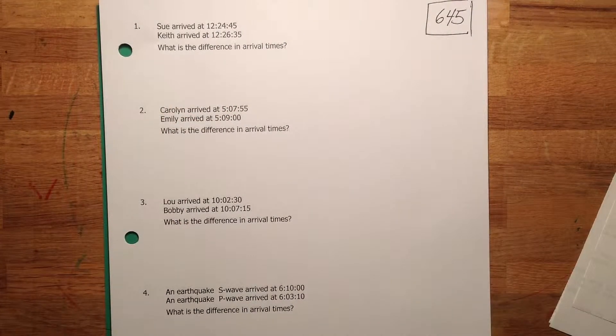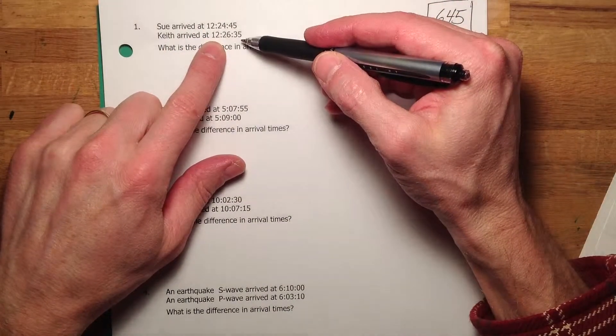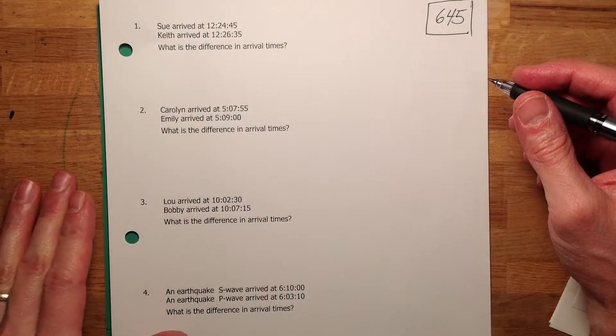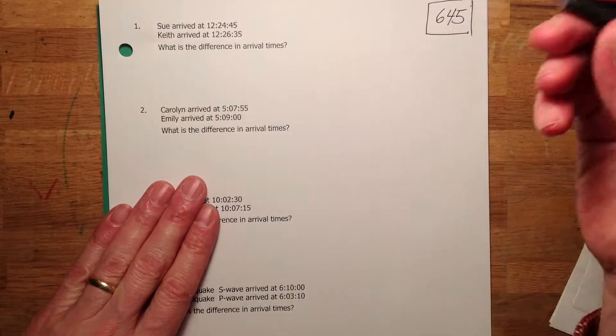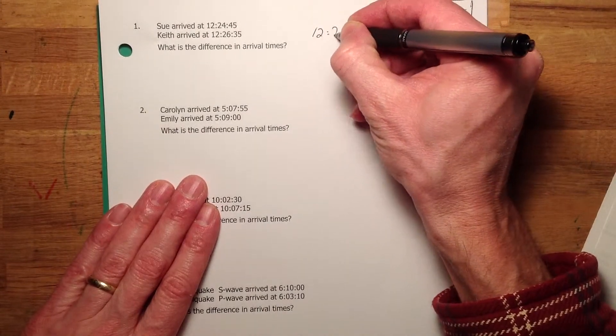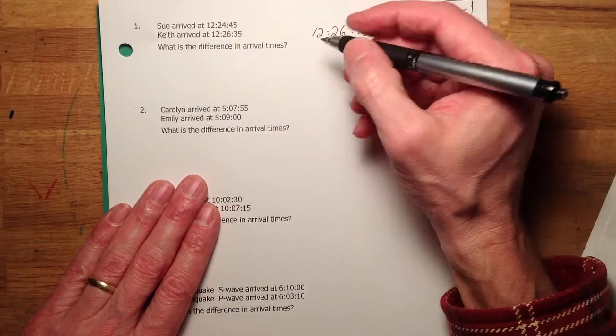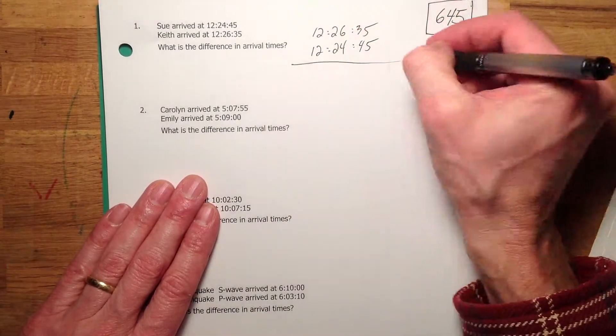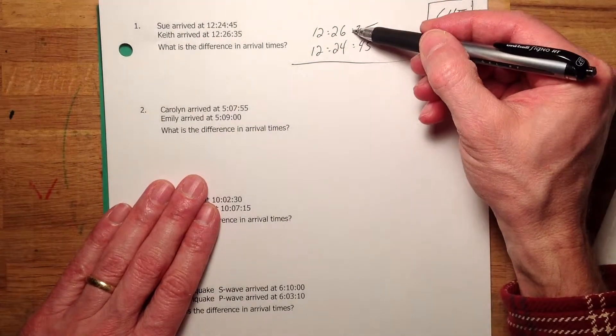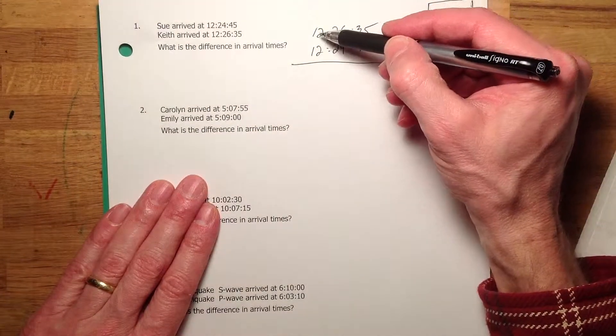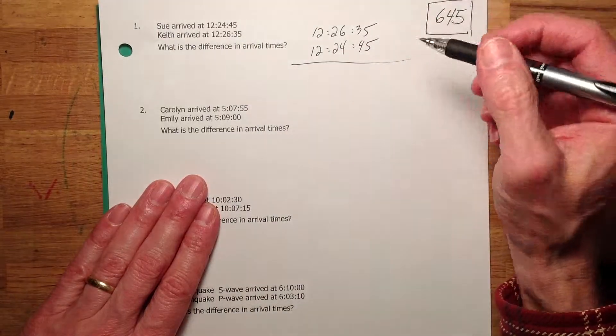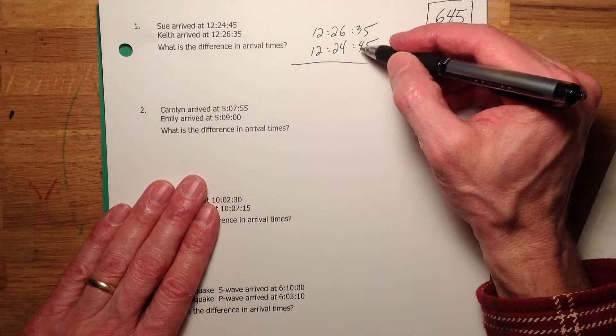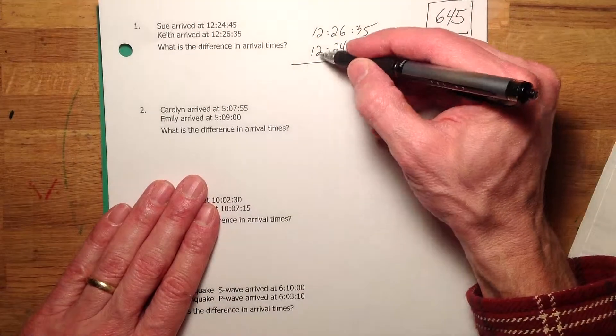So, time math. You need to set this up like this. The higher number goes on top, lower number on the bottom. And you can't use a calculator because a calculator's not going to help you, as you'll see. Watch this. So, it's 12:26:35. Make sure you line them up properly. The key thing with time math is these colons here that separate minutes from seconds and this colon here separates hours from minutes. You've got to be careful of those and treat the seconds separate from the minutes and that separate from the hours.